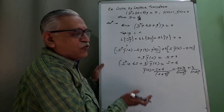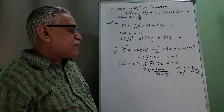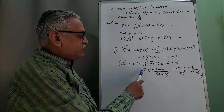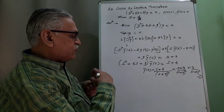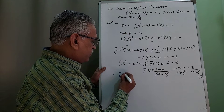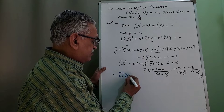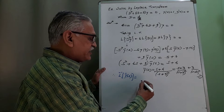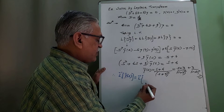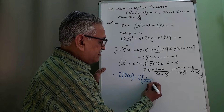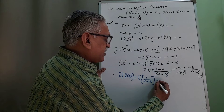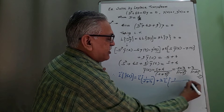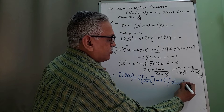The first part is now complete — we call this equation 1. In the next part, we take the inverse Laplace transform of equation 1. Taking the inverse of both sides: y(t) = inverse Laplace of 1/(s + 3) plus 3 times inverse Laplace of 1/(s + 3)².